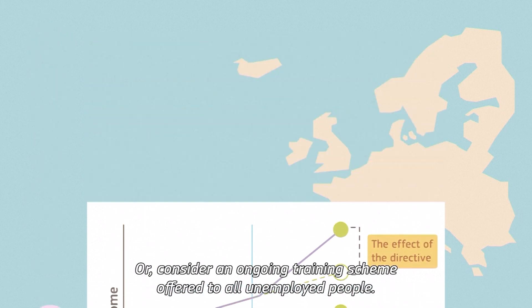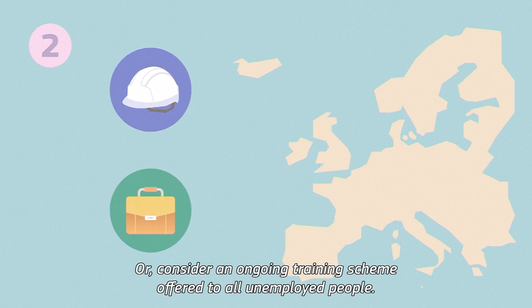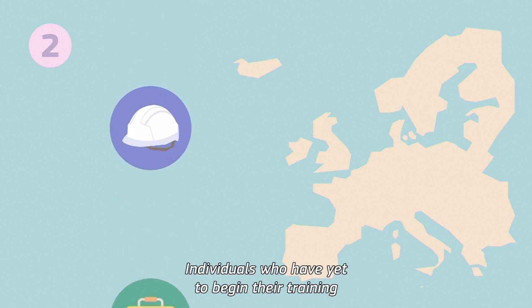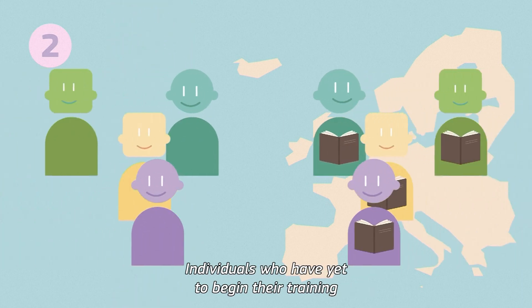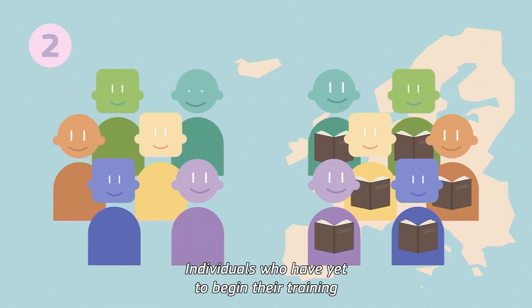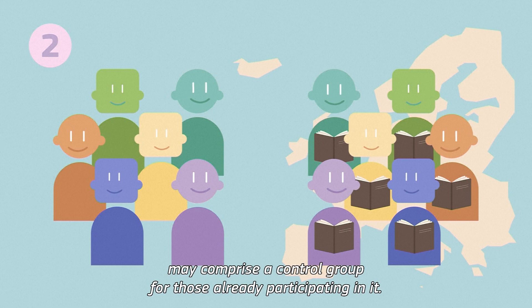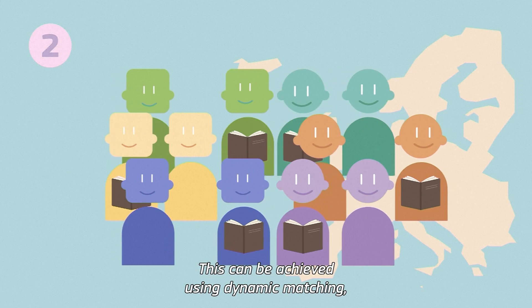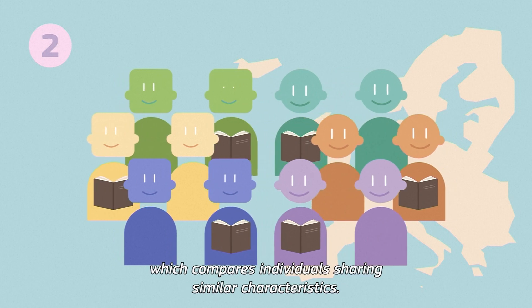Consider an ongoing training scheme offered to all unemployed people. Individuals who have yet to begin their training may comprise a control group for those already participating in it. This can be achieved using dynamic matching, which compares individuals sharing similar characteristics.